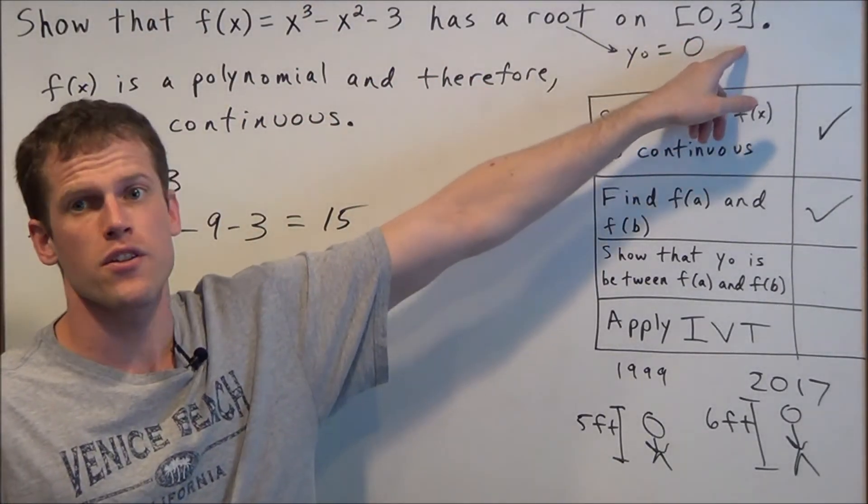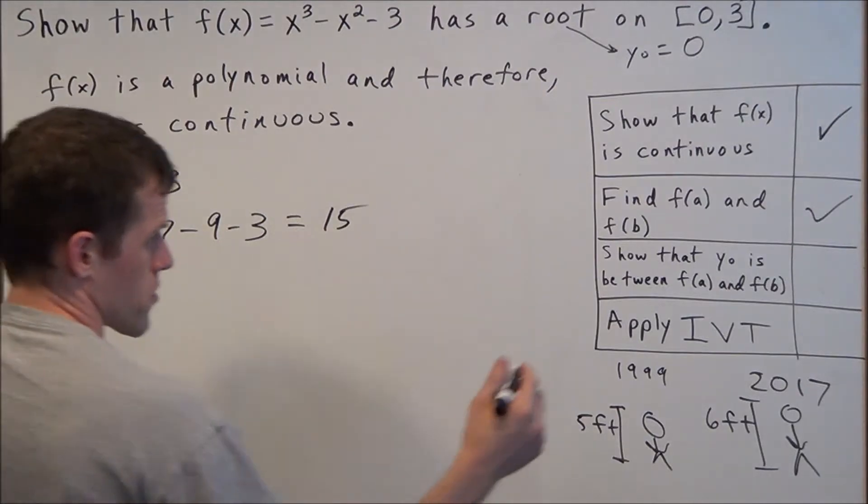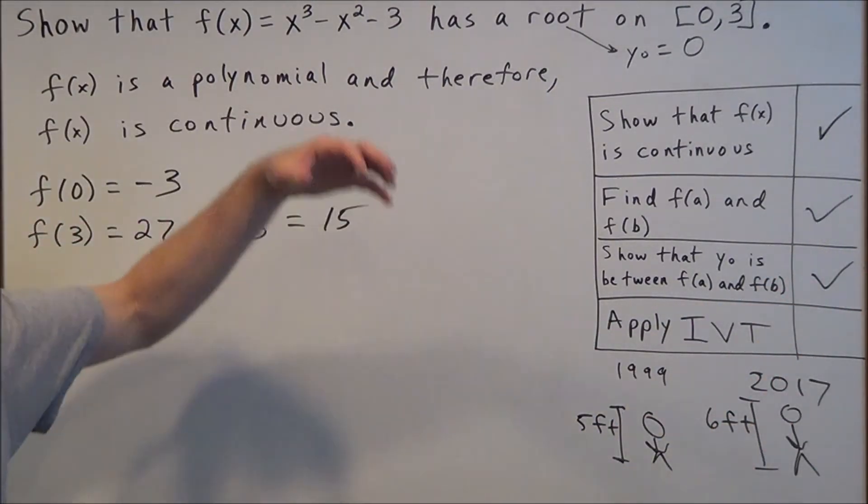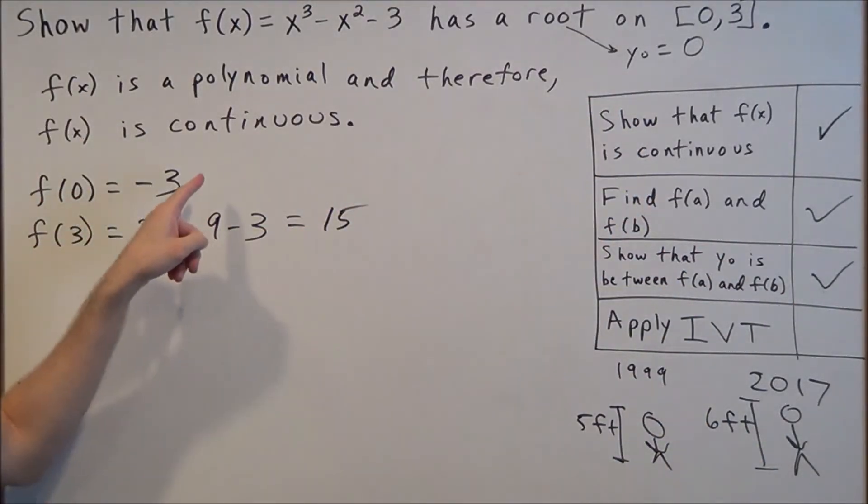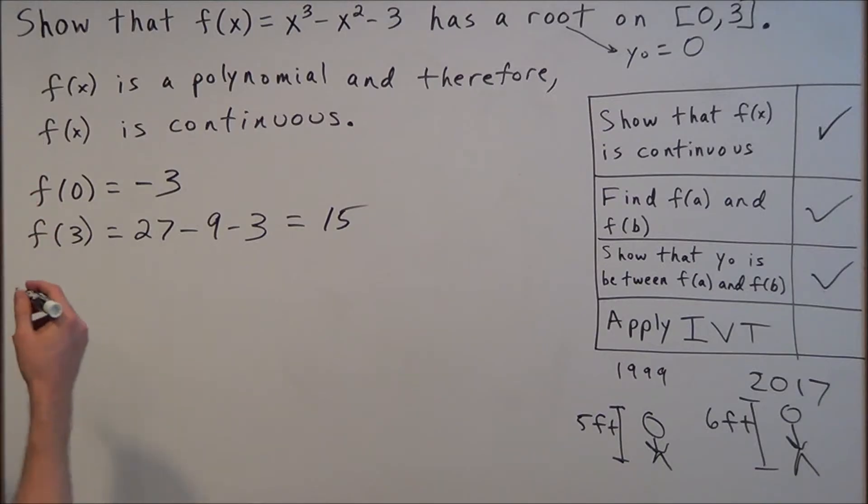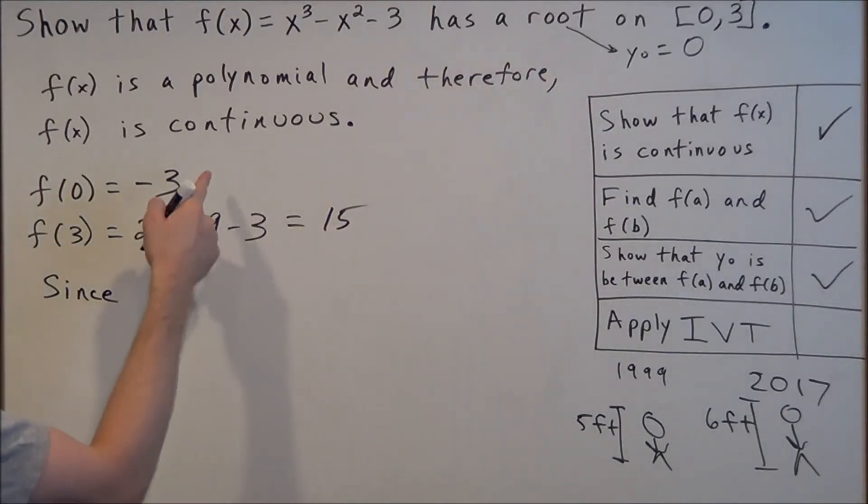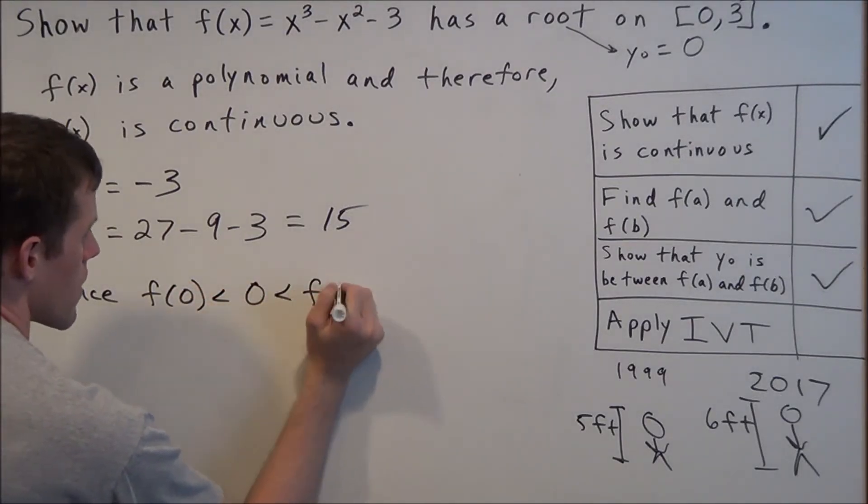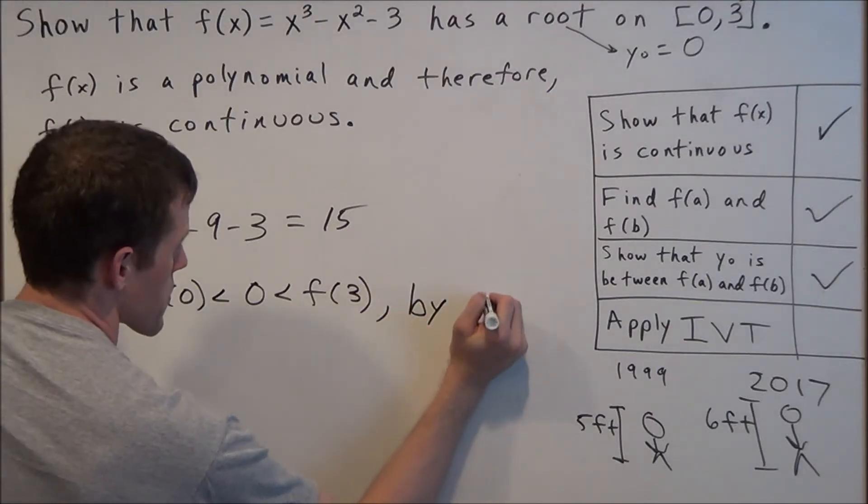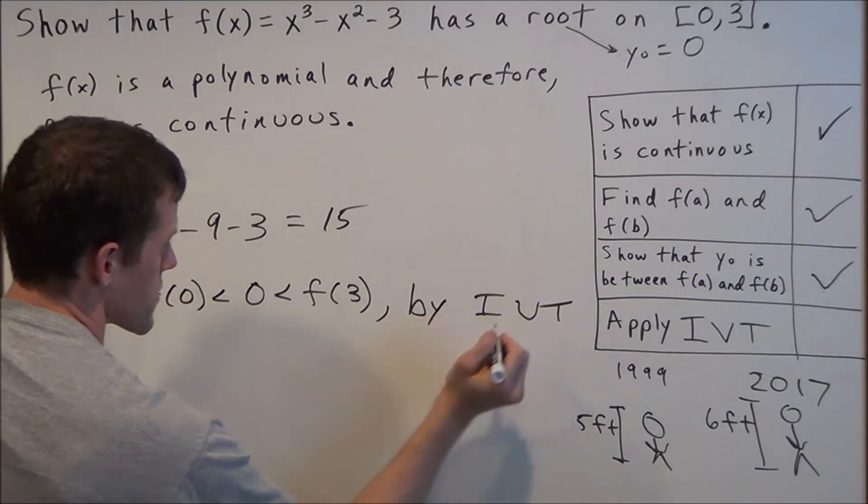To write this out, we can now use the Intermediate Value Theorem. Since 0 is between -3 and 15, or we could say 0 is between f(0) and f(3), by the Intermediate Value Theorem—we'll abbreviate it IVT—